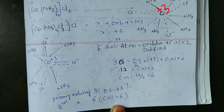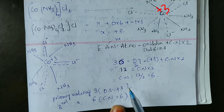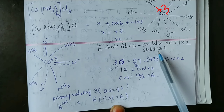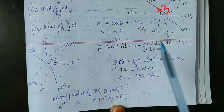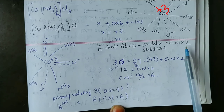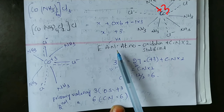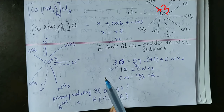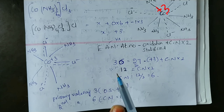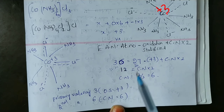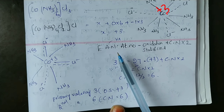To find the coordination number of the metal atom, use the EAN formula: EAN equals atomic number minus oxidation state of the central metal atom, plus coordination number times 2. The effective atomic number (EAN) is the atomic number of the metal atom's nearest noble gas.